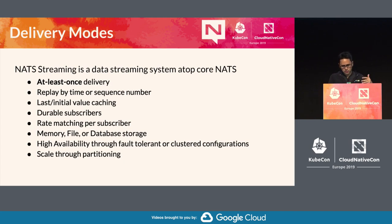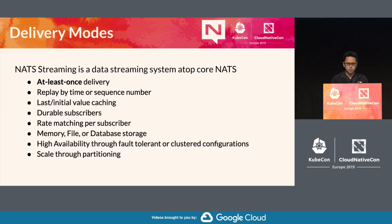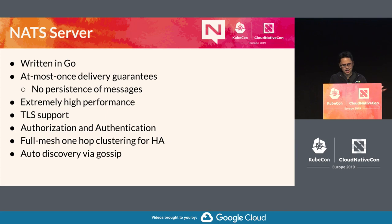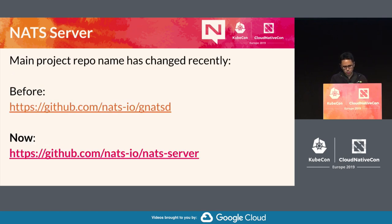NATS Streaming is layered on top of NATS, using Protocol Buffers and the request-response protocol from NATS. You can replay from a certain sequence number. It has durable subscribers, so you can connect and resume consuming messages that have been published. There is a notion of an ACK, unlike core NATS, and you can set the maximum number of in-flight messages for a client. For high availability, we have Raft clustering for message replication.